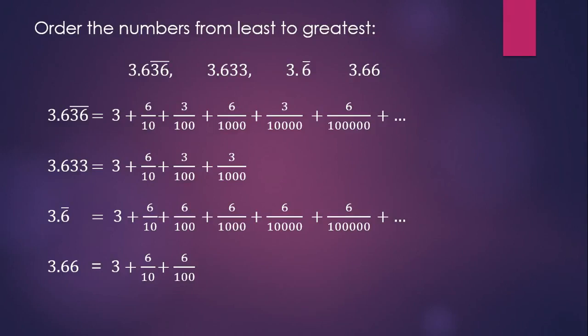The last two numbers have to be our largest numbers in this case, and the very last number would be smaller than the 3.6 repeating, because it does not have any thousandths, but the 3.6 repeating has 6 thousandths. So in order from least to greatest, we have the numbers in this order.